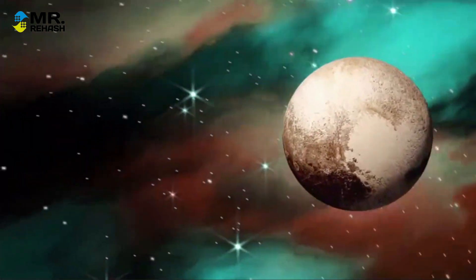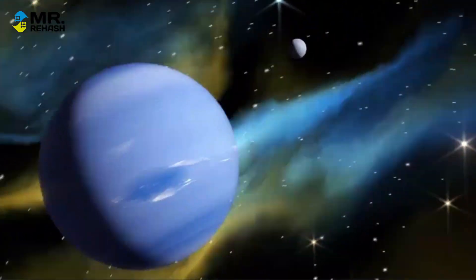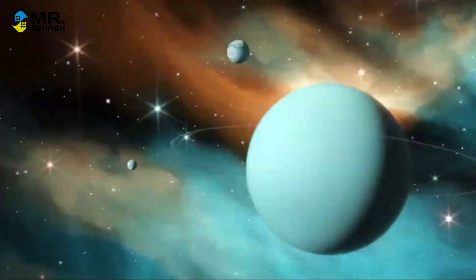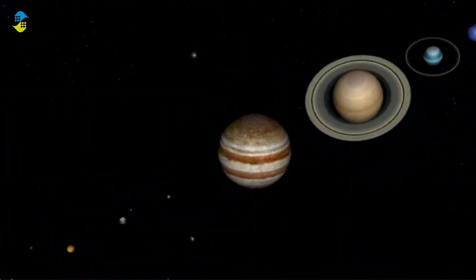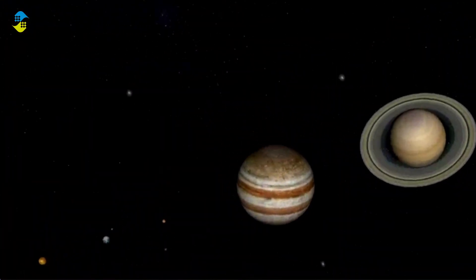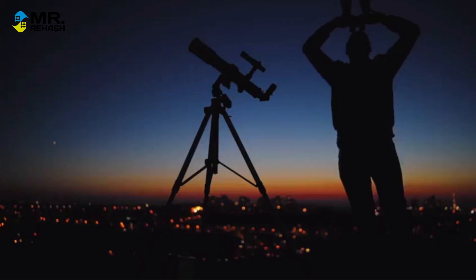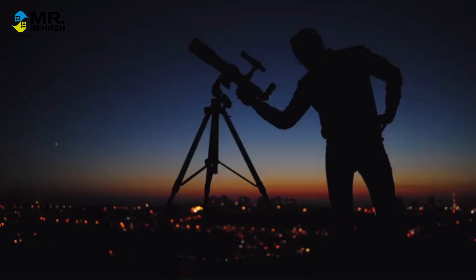So, there you have it, the reasons why other planets are not as visible from Earth as stars. It all comes down to their reflective nature, distance from Earth, and their positions in their orbits. While some planets can be seen with the naked eye, others require telescopes to observe properly.